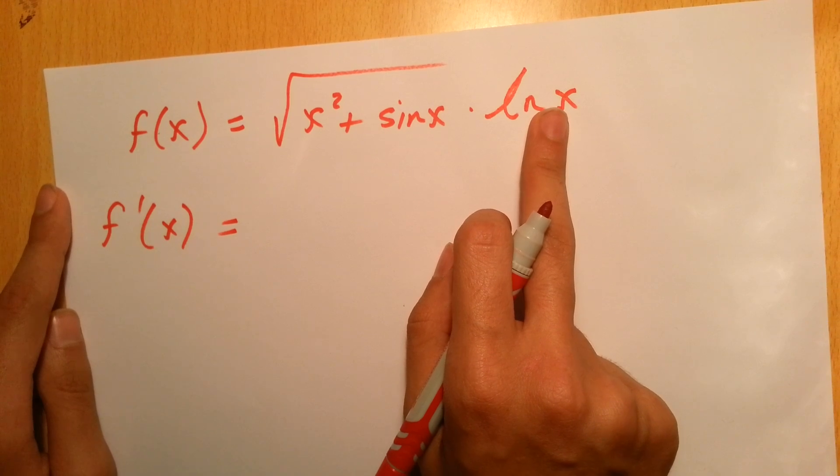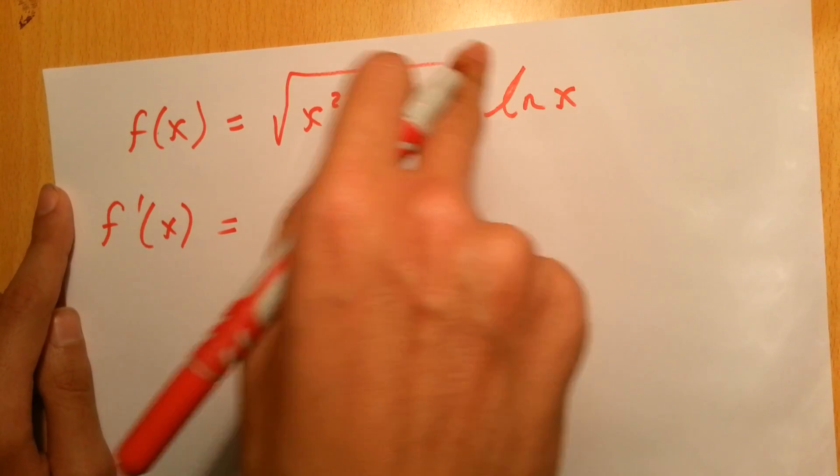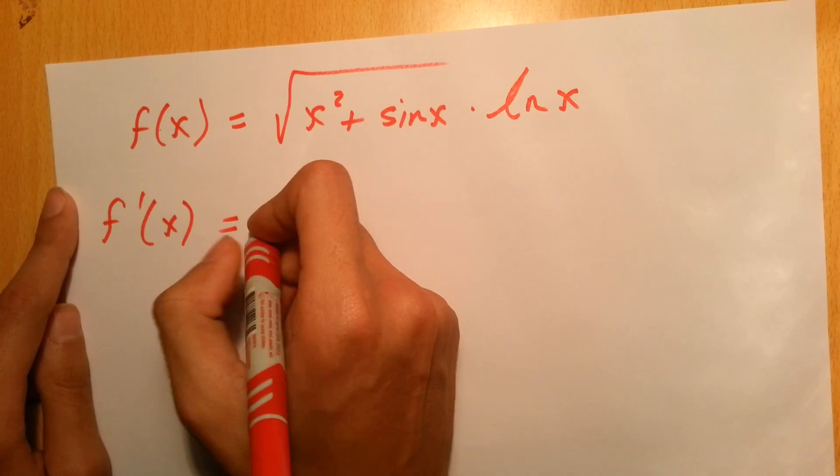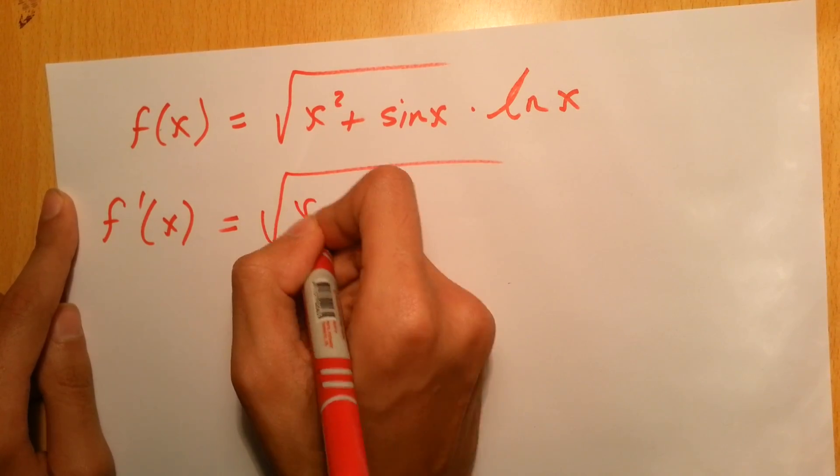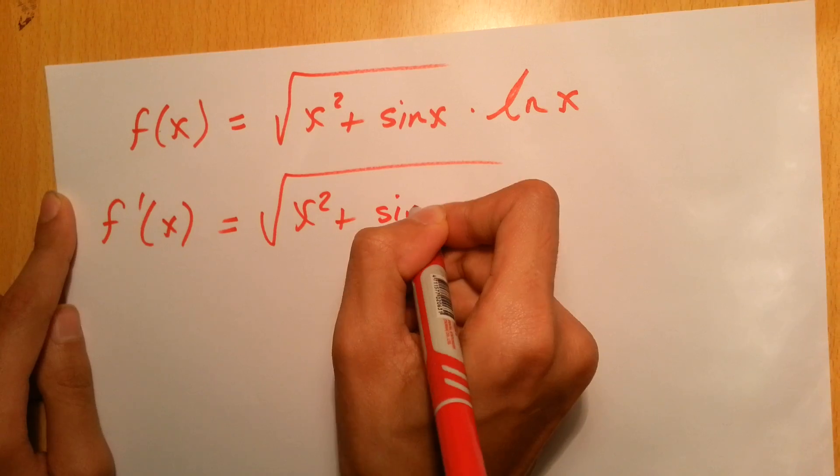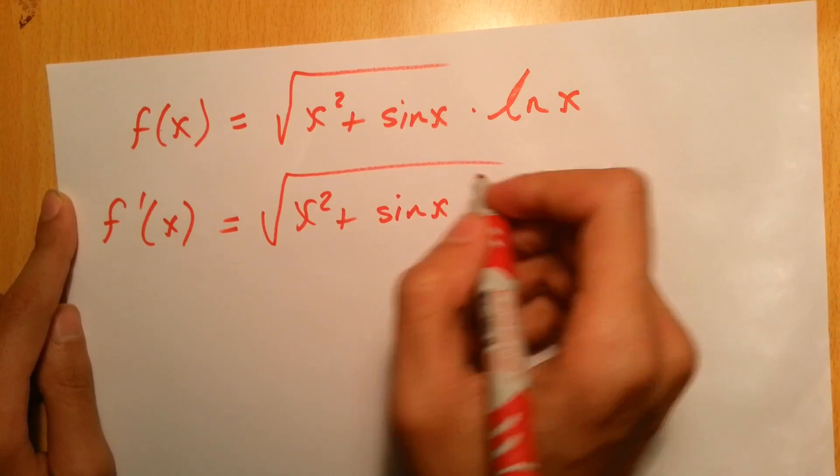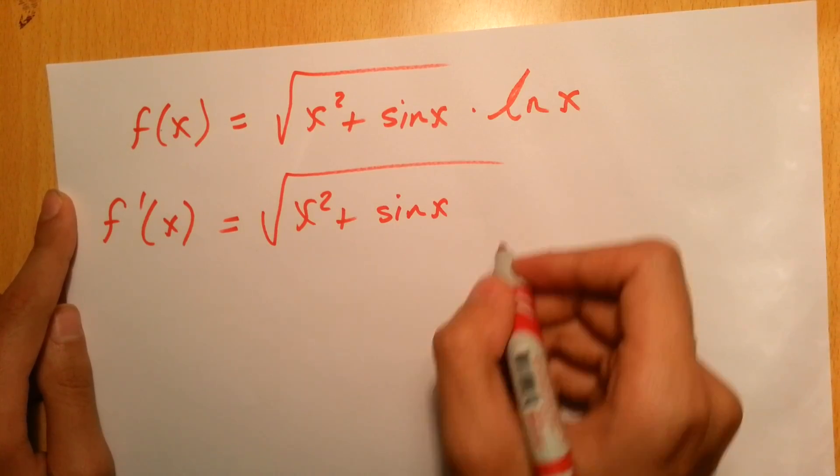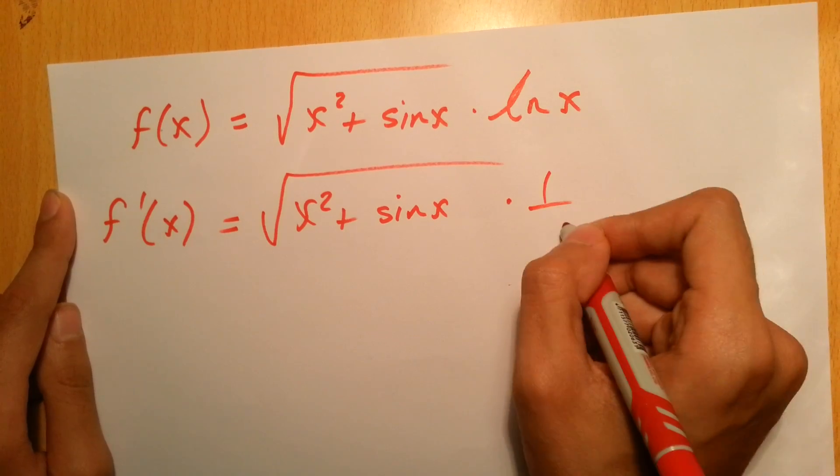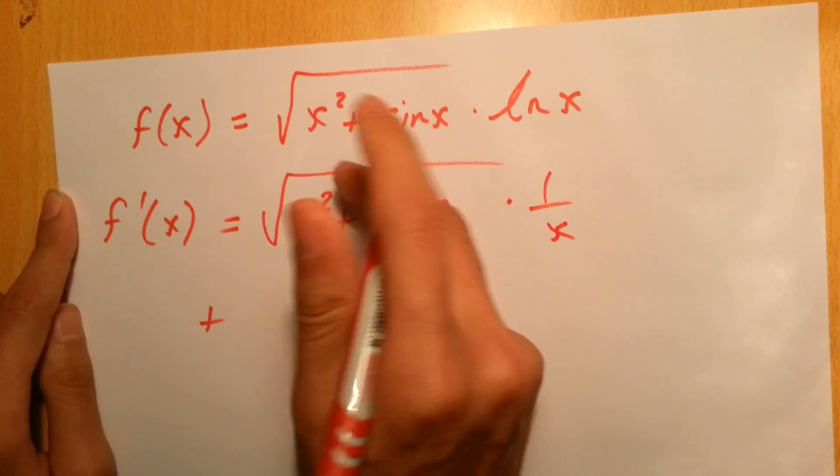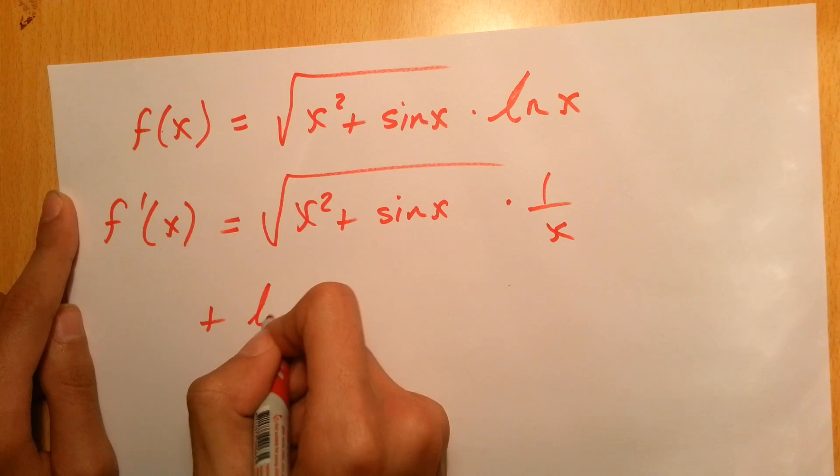The derivative will be easy. It's going to be the first one multiplied by the derivative of the second one, plus the second one multiplied by the derivative of the first one. So it'll be like this: the first one multiplied by the derivative of ln x, which is 1 over x, added to the second one which is ln x.